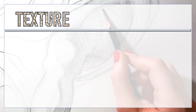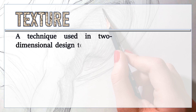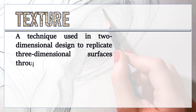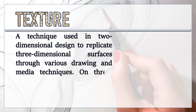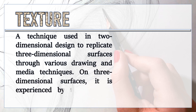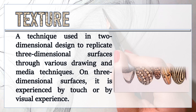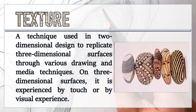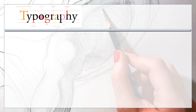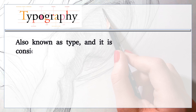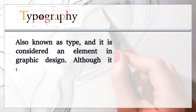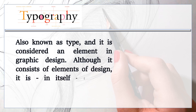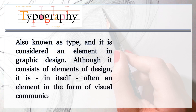Next is texture — a technique used in two-dimensional design to replicate three-dimensional surfaces through various drawing and media techniques. On three-dimensional surfaces, it is experienced by touch or by visual experience. Next is typography, also known as type, and it is considered an element in graphic design, consisting of elements of design in the form of visual communication.